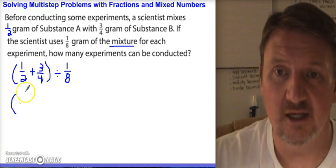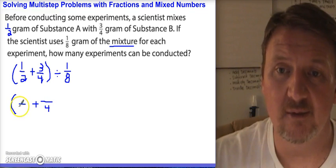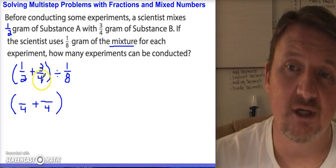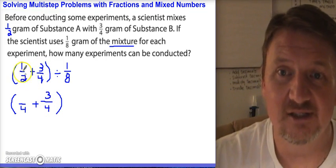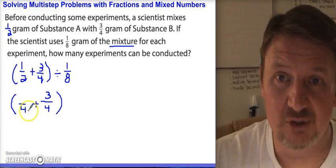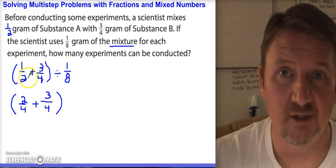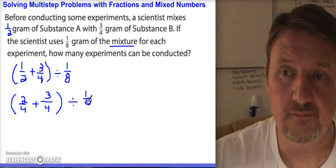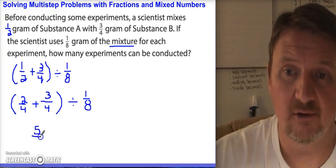I'm going to follow the same steps as the last problem. The common denominator for one-half and three-quarters is going to be 4, just like before. I multiply two by two to get four, so I multiply one by two to get the numerator — two-fourths is equivalent to one-half. Three-fourths stays the same. So now I can add: two-fourths plus three-fourths is five over four, and I'm dividing that by one-eighth.